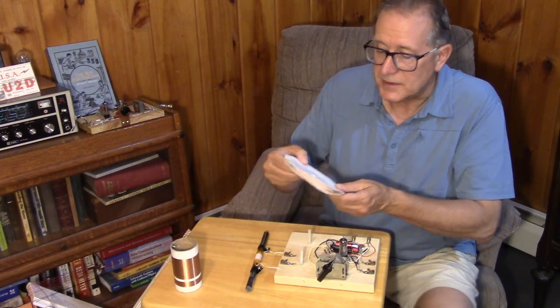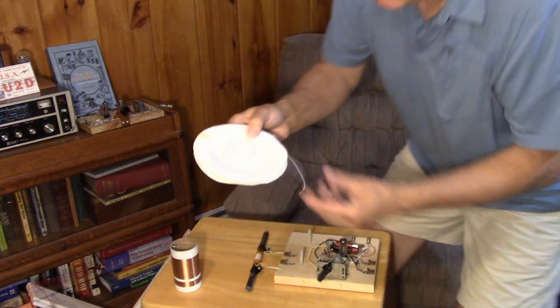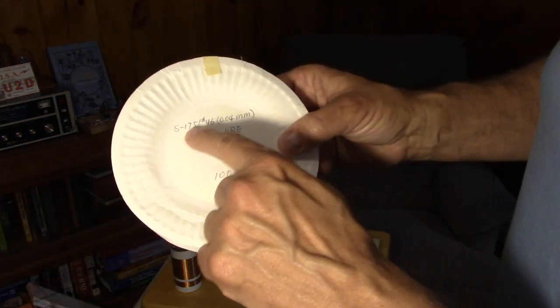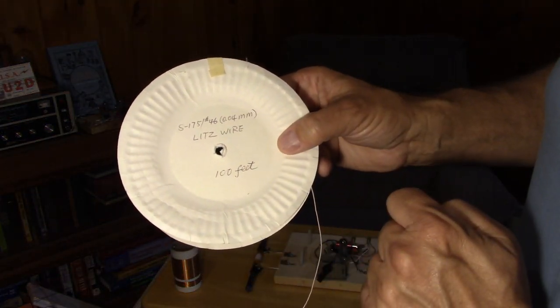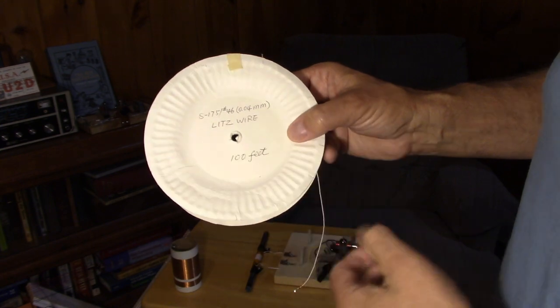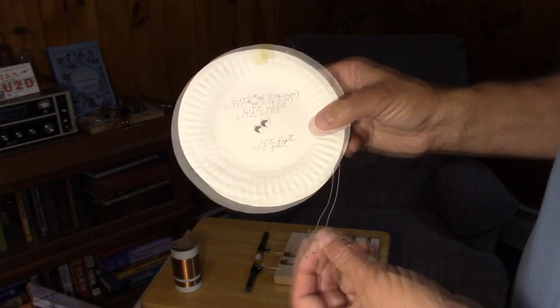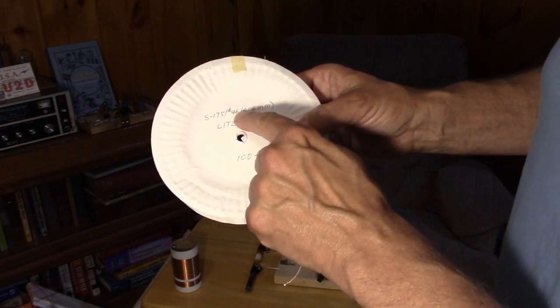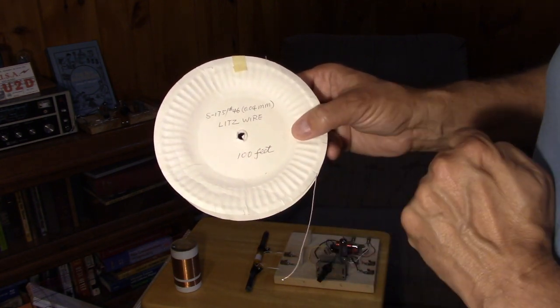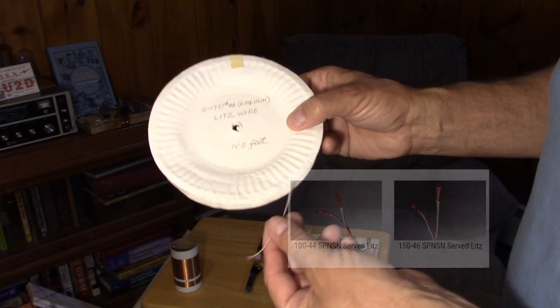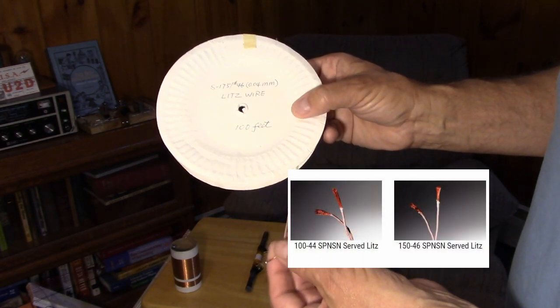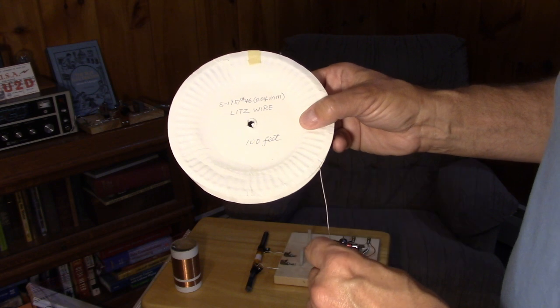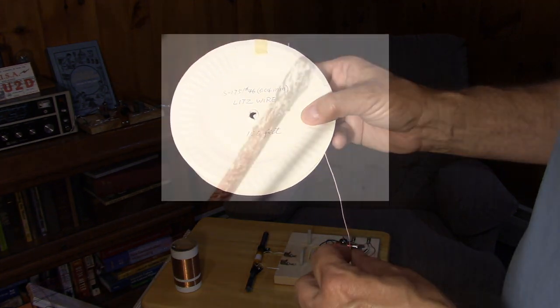The Litz wire that I'm using happens to be a fairly thick one. It's a 175-46, meaning it's 175 individually enameled wires, all in a bundle, and they're all number 46 wires twisted together. This Litz wire allows you to get much better selectivity with the ferrite rod.